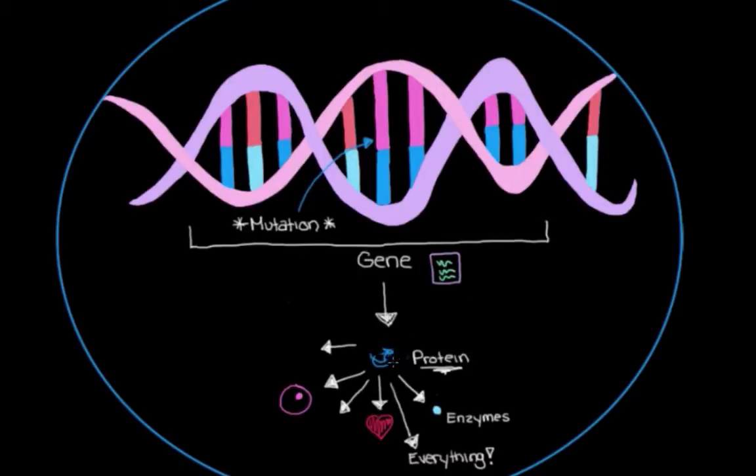And so the proteins that should be made, the proteins that we want these genes to make, now they can't be made properly anymore. At least in cells that have these genes that are affected, that are changed, that are mutated. And when proteins aren't made properly, they won't be able to carry out their normal roles anymore.